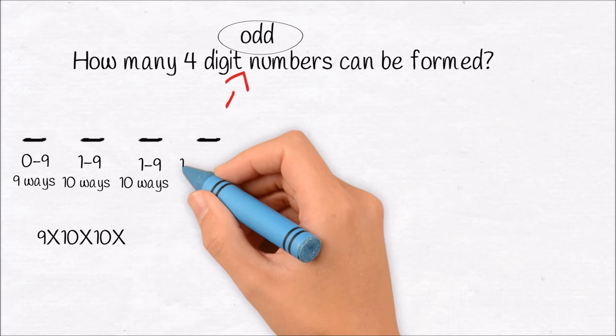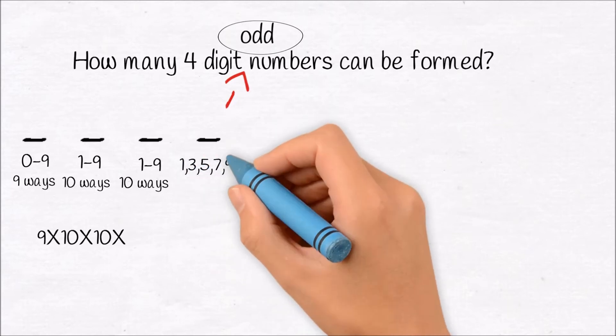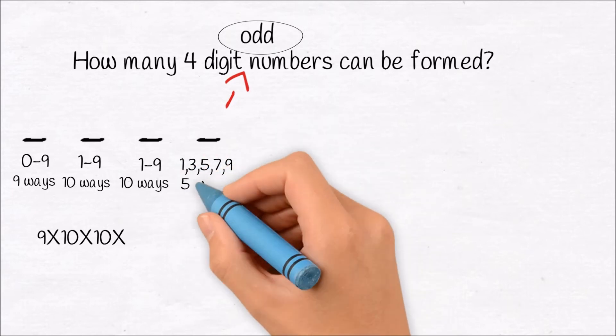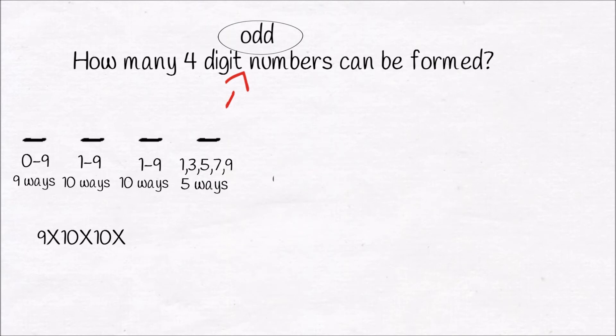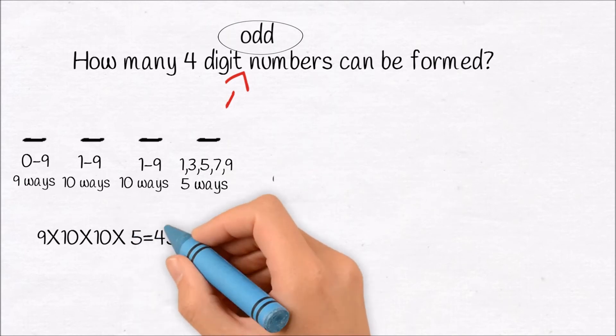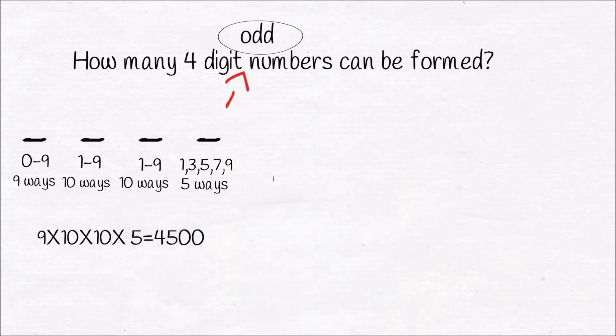So the unit position can be filled by either 1, 3, 5, 7, or 9. So the unit position can be filled by 5 ways. So total 4-digit odd numbers can be obtained by 9 into 10 into 10 into 5, which is 4500.